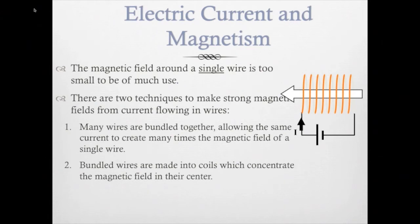So when we're looking at electric current and magnetism together, lots of times the field around a single wire is going to be too small to do much good. So there's two different ways we can make a strong magnetic field from current flowing in the wires. The first way is to put many wires bundled together. This allows the same current to create many times the magnetic field of a single wire, so you're coiling it up. Next we have bundled wires, and we bundle the wires into coils, and this concentrates the magnetic field in the center.